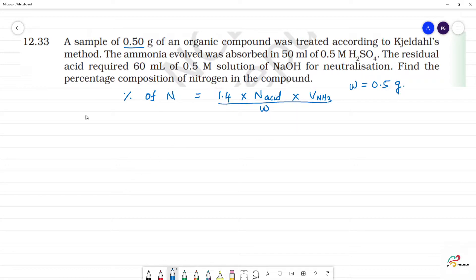Now, we calculate the first normality of acid. Normality of acid is equal to molarity into N factor. Normality of acid is H2SO4. Then, normality of acid is equal to 0.5M H2SO4. Molarity is 0.5. N factor is how many replaceable H plus ions, which are 2. So normality of acid is equal to 0.5 into 2 is 1, 1N.